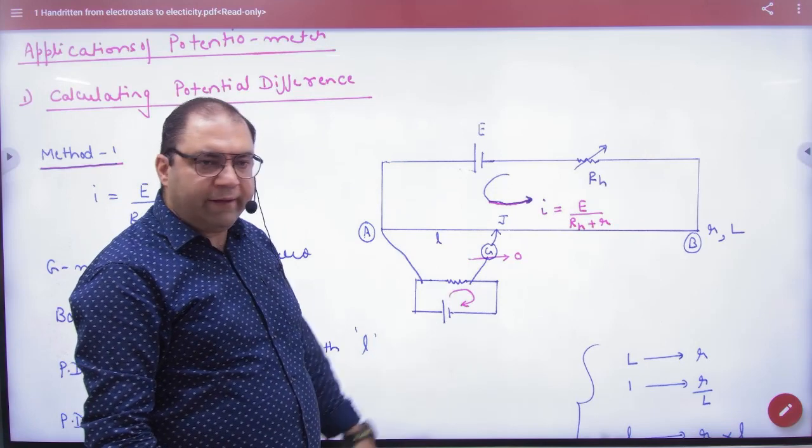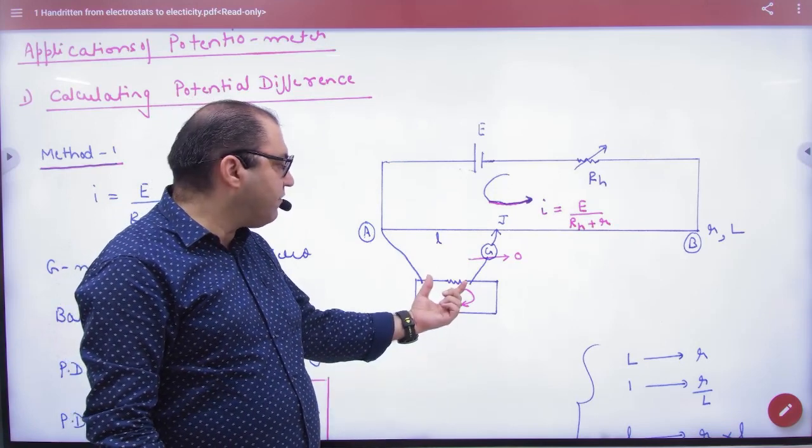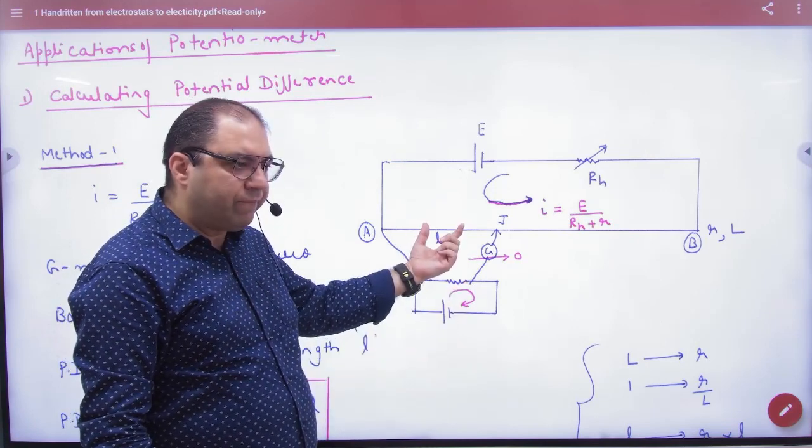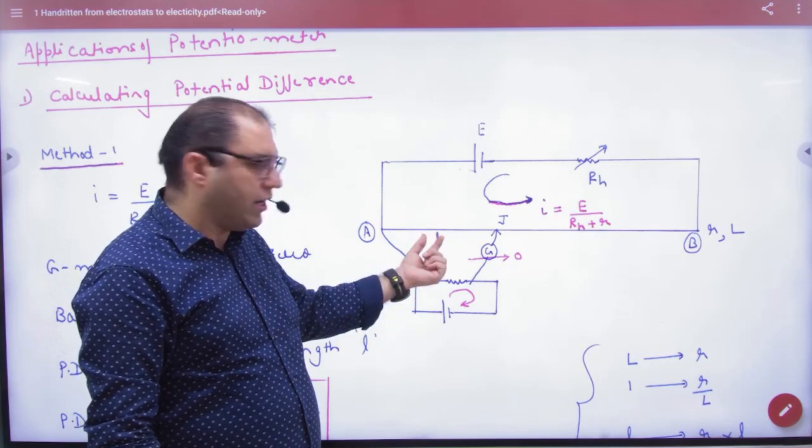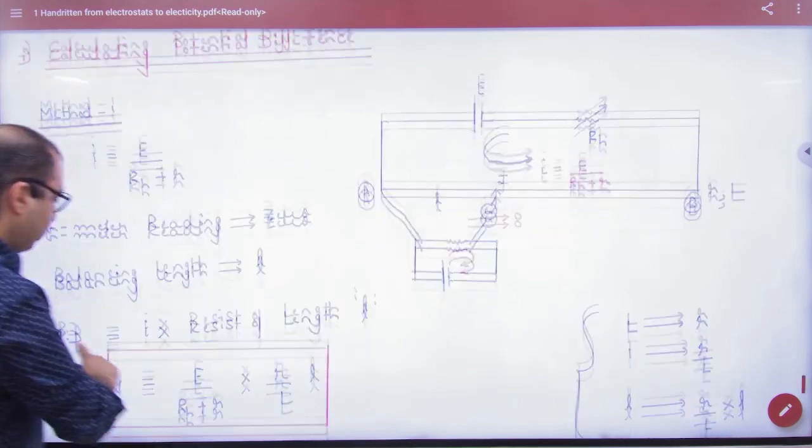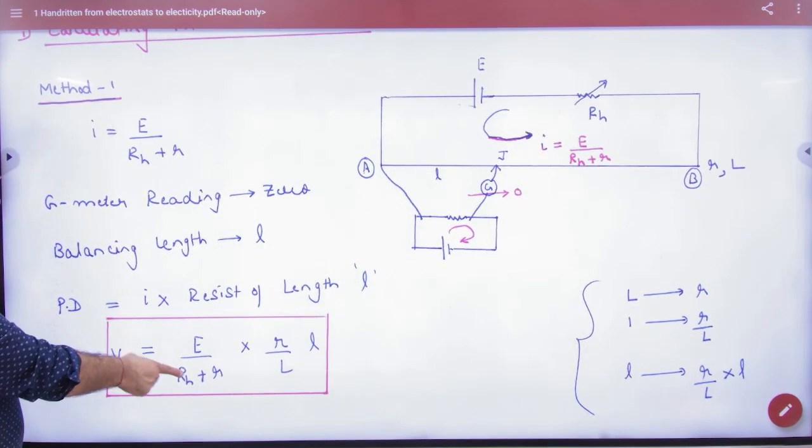Balancing length is small L. So here the potential difference and here the potential difference is the same. What is current here? I into resistance of length L. So I apply Ohm's law. I already have a value of I.